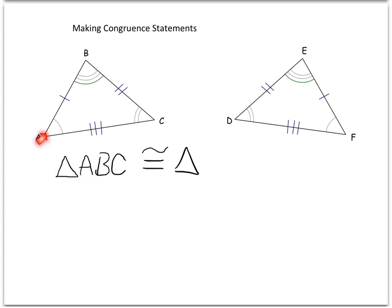So vertex A, as we just said, matched up with vertex F, so we start with F. Vertex B matches up with vertex E, so this is triangle FED. Last one, C and D both match up.